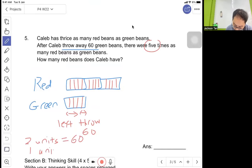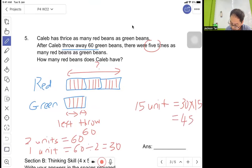Throwing away 60, so two units equal 60. One unit equals 60 divided by 2 equals 30. So 15 units equals 30 times 15 equals 450.